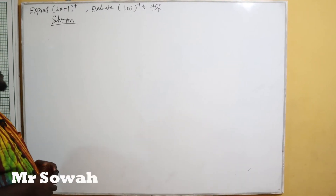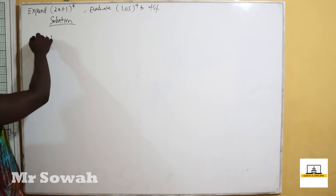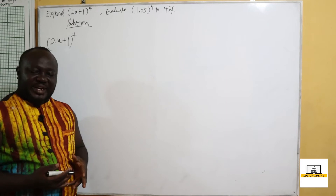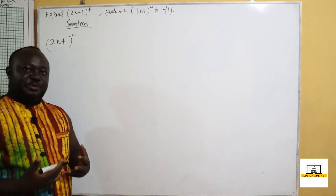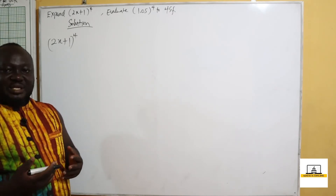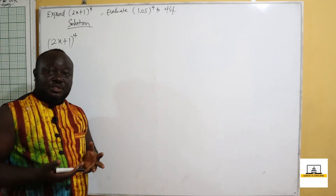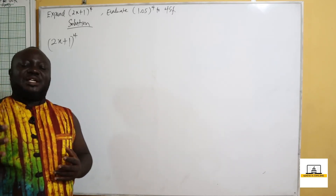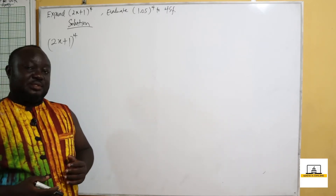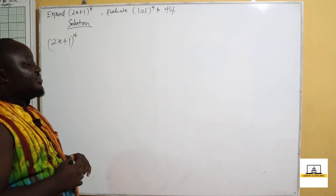We are told to expand (2x + 1) raised to the power of 4. It wasn't specified which method to use — whether the binomial theorem itself, the combination method, or Pascal's triangle. One person could just write 2x+1 four times and expand it, but we are going to use Pascal's triangle to expand (2x + 1)^4.